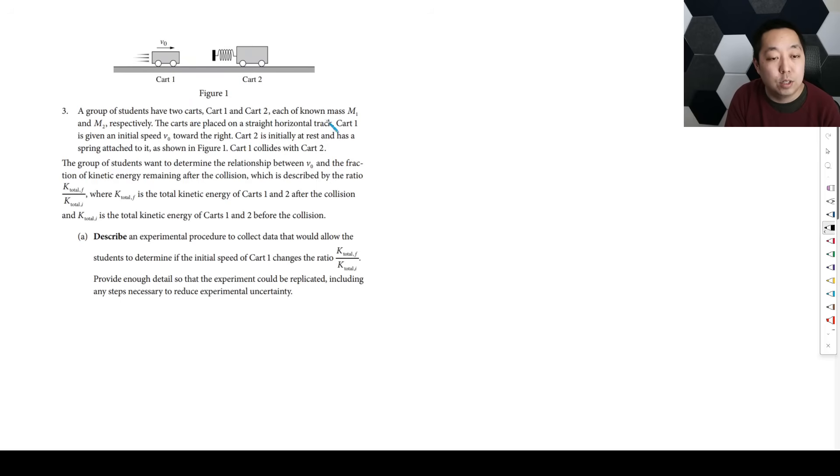A group of students have two carts, cart 1 and cart 2, each of known mass M1 and M2 respectively. The carts are placed on a straight horizontal track. Cart 1 is given an initial speed V0 toward the right. Cart 2 is initially at rest and has a spring attached to it as shown in figure 1. The students want to determine the relationship between V0 and the fraction of kinetic energy remaining after the collision, described by the ratio K total F over K total I.